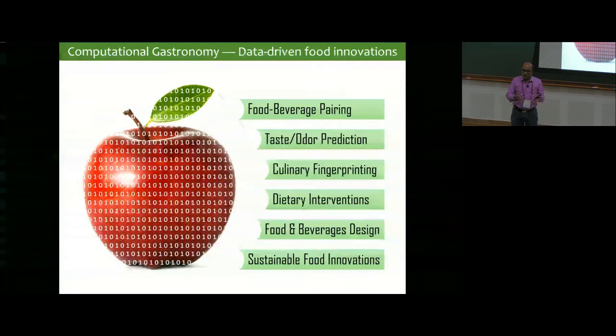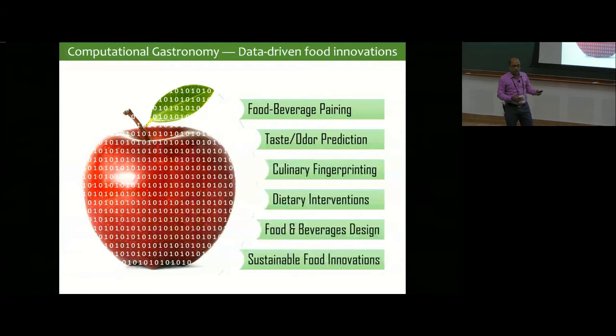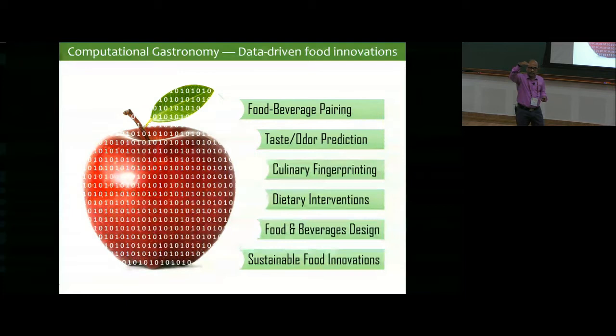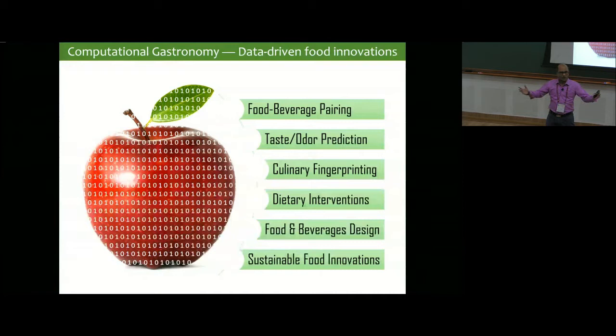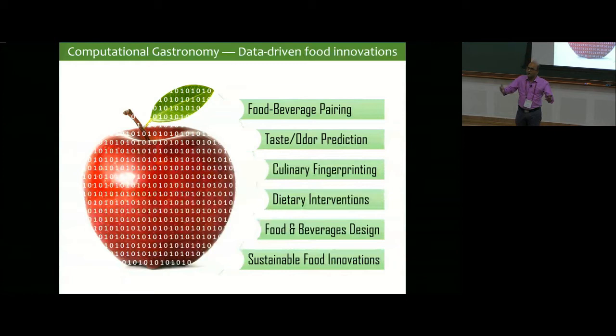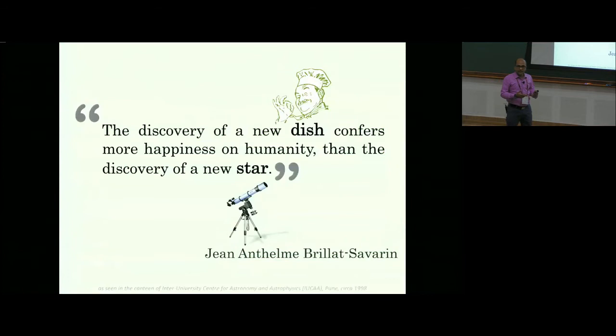Such studies need to be replicated across different cultures, because dietary advice will eventually be specific to your cuisine—not something you don't like to eat. There is a gamut of things we are working on, including diet design, dietary interventions, novel recipe design, food-beverage pairing, prediction of taste and odor from molecular properties, and in the longer run, sustainable food innovations: how can we revive older recipes, use edible ingredients no longer incorporated into modern recipes, and bring back that revolution? In a country like India, this work has immense potential.